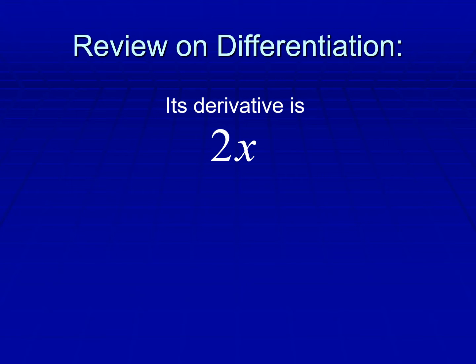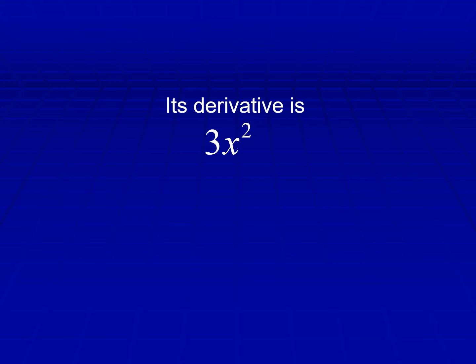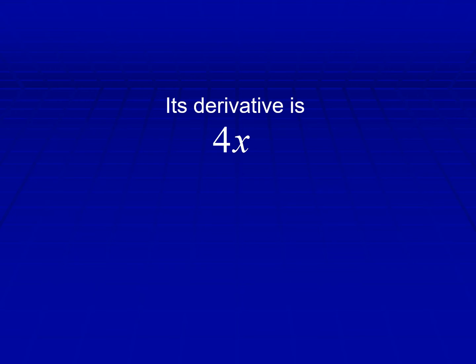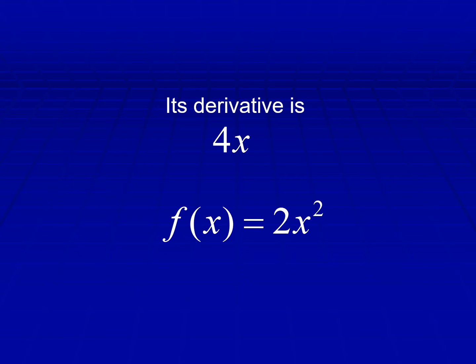So let us have a review on differentiation. Its derivative is 2x — yes, correct — f of x is equal to x squared. Its derivative is 3x squared, so f of x is equal to x to the third. How about its derivative is 4x? So f of x is equal to 2x squared.